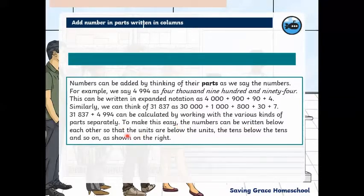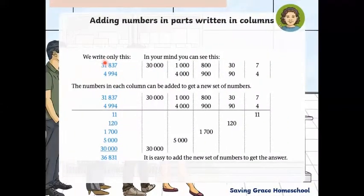To make this easy, the numbers can be written below so that the units are below the units, the tens are below the tens, and so on. So we have 31,837 and 4,994 with the units above the units, the tens above the tens, hundreds above the hundreds, thousands above the thousands, and ten thousands above ten thousands. You can see there's no ten thousand digit with this bottom number.